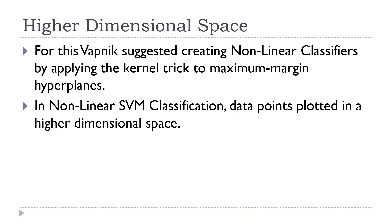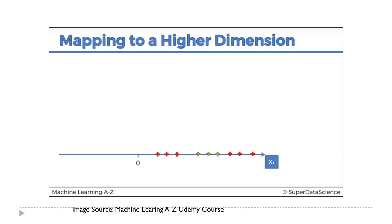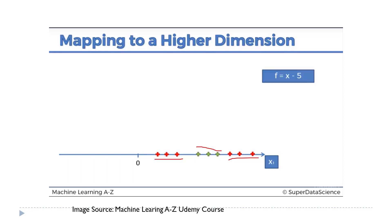Let us consider the process of mapping to a higher dimensional space with this example. Here we have a total of nine data points which have only one dimension, x. Out of these nine points, six points belong to class B while the middle three points belong to class A. We wish to identify a hyperplane which can linearly separate these two classes.